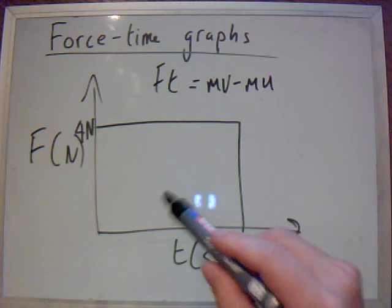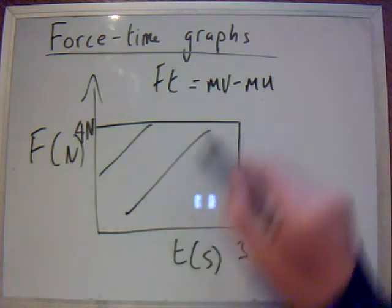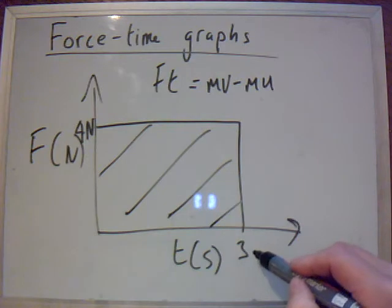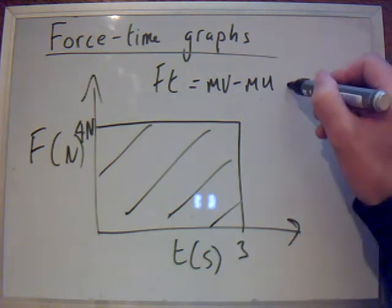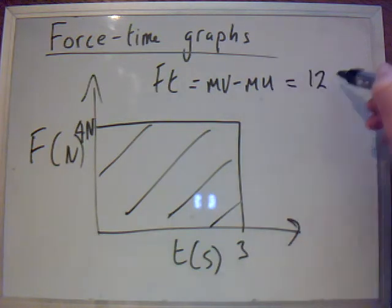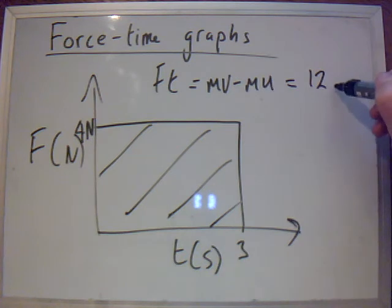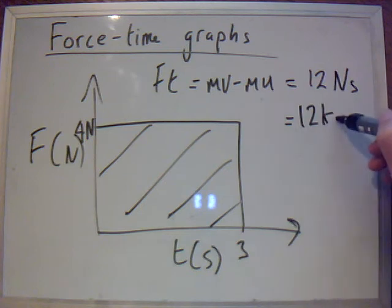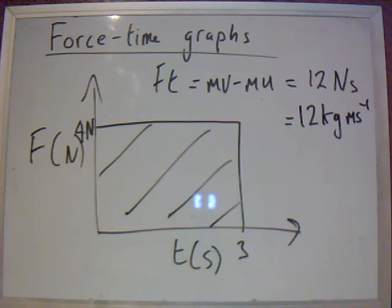So, the change in momentum will in fact be the area under the graph. So, that's 4 times 3, which is 12. So, the change in momentum is 12. Now, you can write that as Newton seconds or you can write that as 12 kilograms meters second to the minus 1. They are the same units.